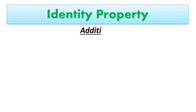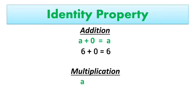Now the next property is identity property. Identity property is true for addition and multiplication. The sum of any number and 0 is that number — for example, A plus 0 equals A. For multiplication, the product of any number and 1 is that number, as A multiplied by 1 equals A. For example, 6 multiplied by 1 equals 6.